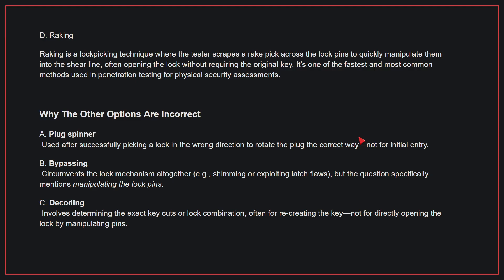Why the other options are incorrect: A, plug spinner — this is used after successfully picking a lock in the wrong direction to rotate the plug the correct way, not for initial entry. B, bypassing — this circumvents the lock mechanism altogether, but the question specifically mentions manipulating the lock pins. C, decoding — this involves determining the exact key cuts or lock combination, often for recreating the key, not for directly opening the lock by manipulating pins. Therefore, the correct answer is D.